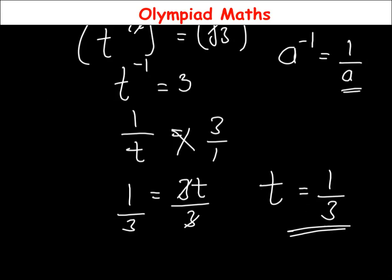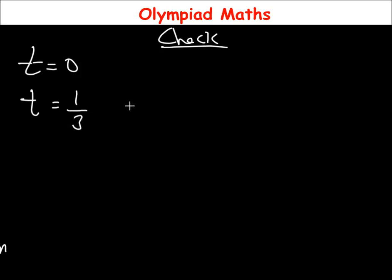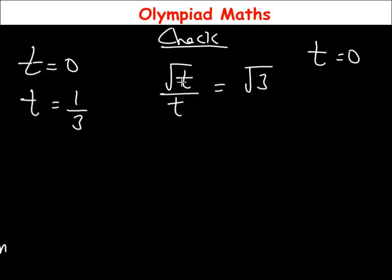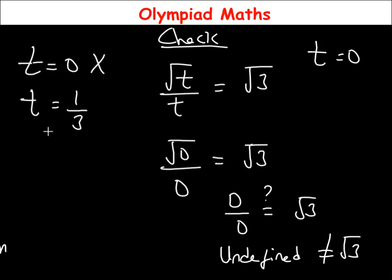Now let's confirm the values we obtained. The first value was t equals 0. Substituting into √t over t equals √3: we get √0 over 0, which is 0/0 — this is undefined, and it is not equal to √3. So t equals 0 is not the correct answer.